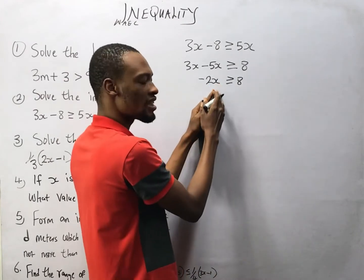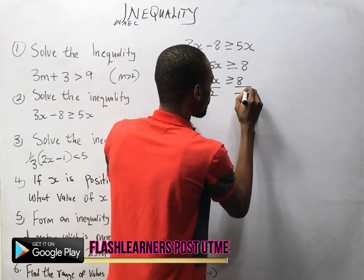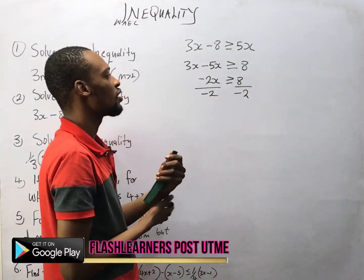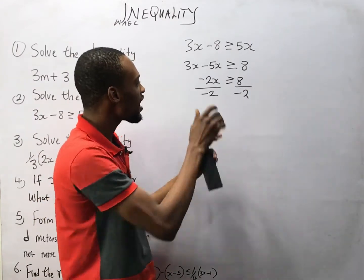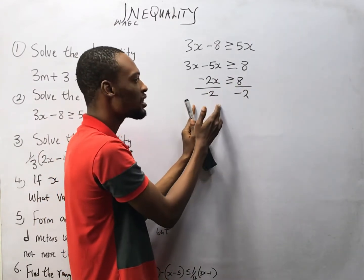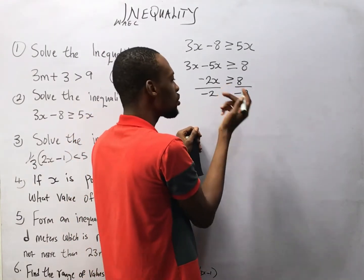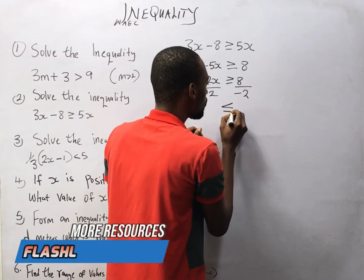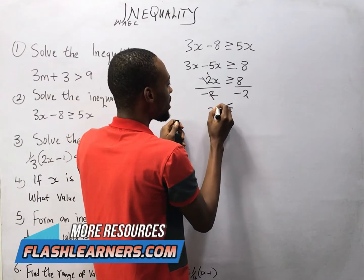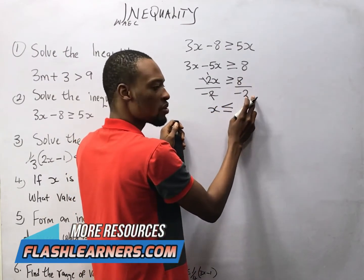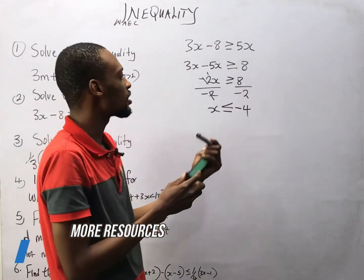Now, to get s, we divide both sides by minus 2. Notice we are dividing by a negative number, and in inequality, when you divide both sides by a negative number, the sign changes. So this changes from greater than or equal to, to lesser than or equal to. Minus 2 divided by minus 2 is 1, leaving s, and 8 divided by minus 2 is minus 4. This is the solution to the second question.